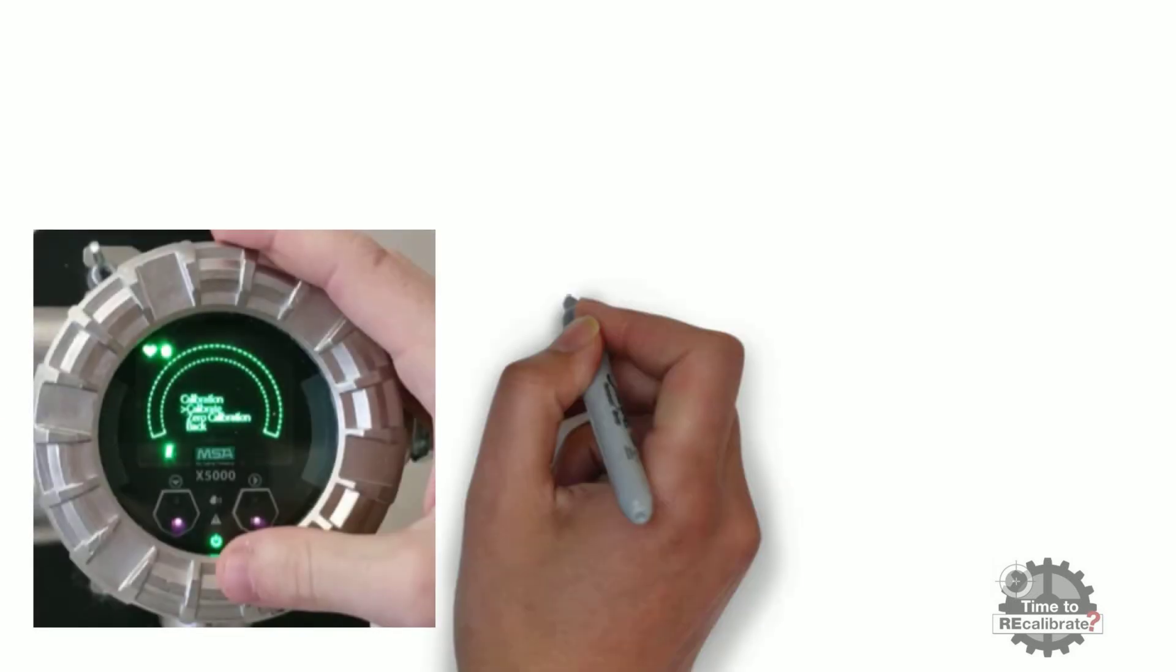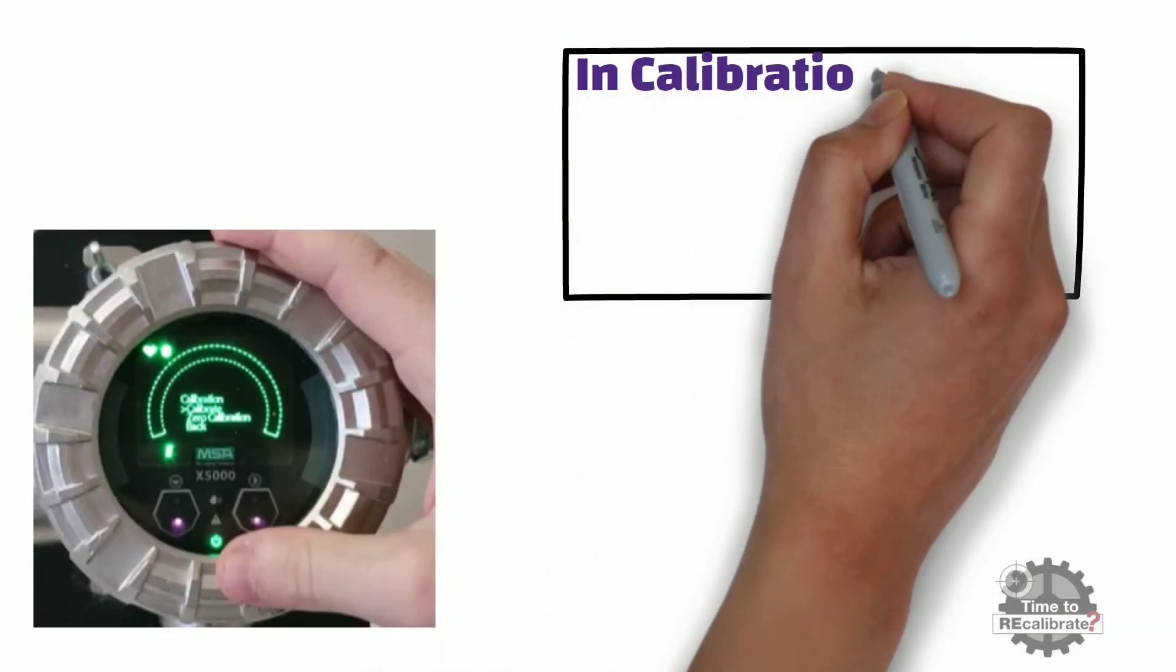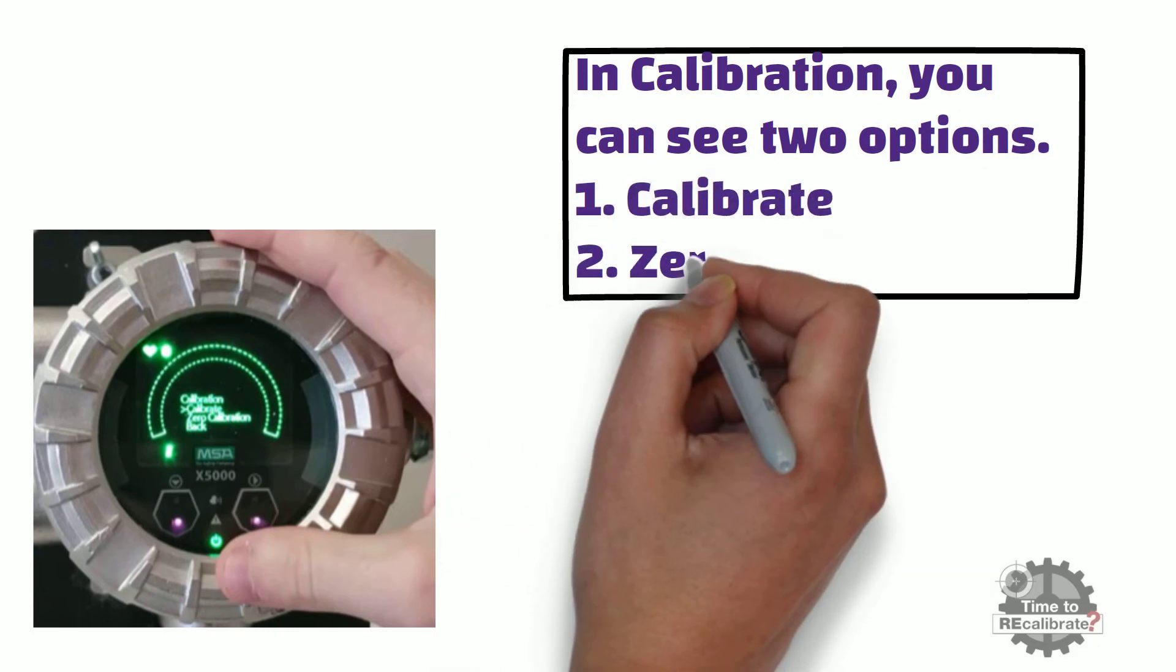In the calibration menu, you can see two options. First option is calibrate, and second option is zero calibration.